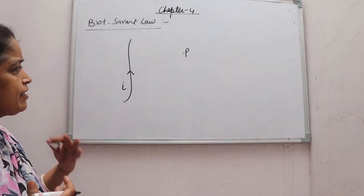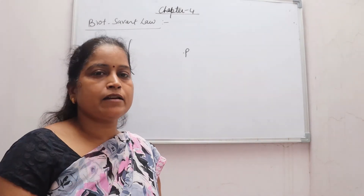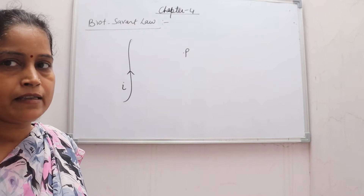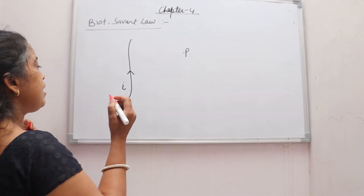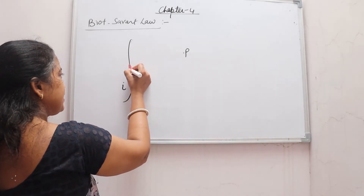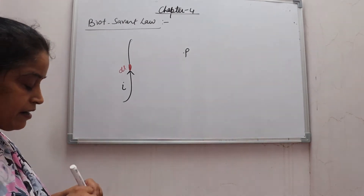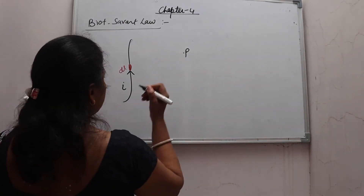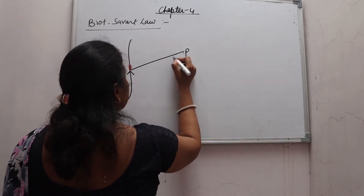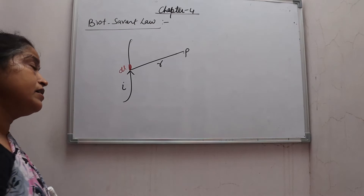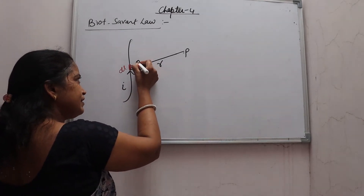If the length of this full conductor is L, then we cannot directly calculate the intensity at point P. For this, Biot-Savart has said that we will select a small element of length DL. Suppose it is DL. And the distance from this element to point P, suppose it is R. What is the angle between DL and R? Theta.